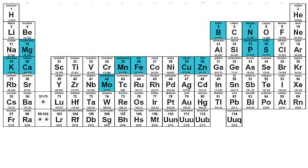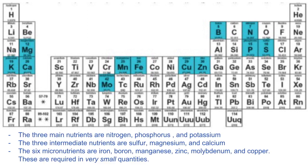But if you do need to add your own nutrients, it is important to know what they are. The three main nutrients are nitrogen, phosphorus, and potassium. The three intermediate nutrients are sulfur, magnesium, and calcium. The six micronutrients are iron, boron, manganese, zinc, molybdenum, and copper, which are required in very small quantities.